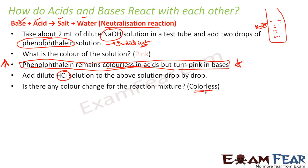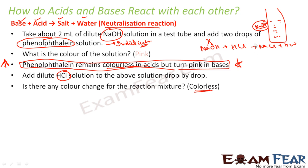Why did it become colorless? It will become colorless only in acid. The solution had some NaOH — say 2 ml. When you add HCl to NaOH, it gives NaCl plus H₂O, forming salt. After some time, all the NaOH is exhausted because it has all been used by HCl to create salt.